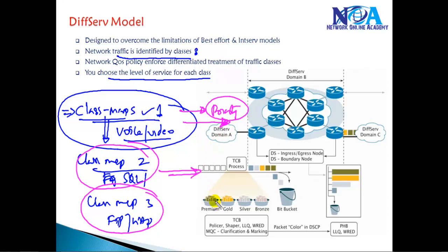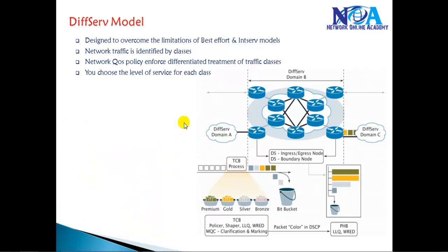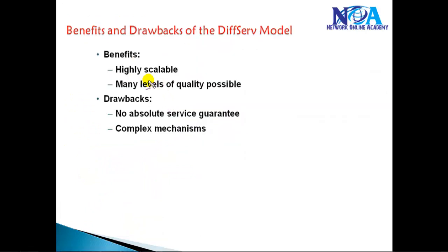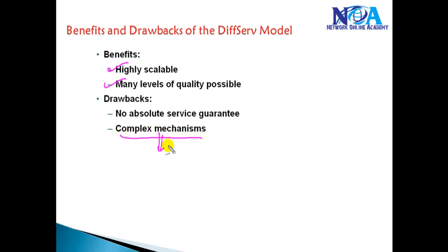In Differentiated Services, each traffic type is treated based on user-defined class maps. As you can see, traffic can be categorized into tiers like Premium, Gold, Silver, and Bronze — once packets enter the router, each is treated in a differentiated way. The major benefit is that it is highly scalable for large networks and we can define different levels of quality. The drawback is that it is a more complex mechanism to implement.